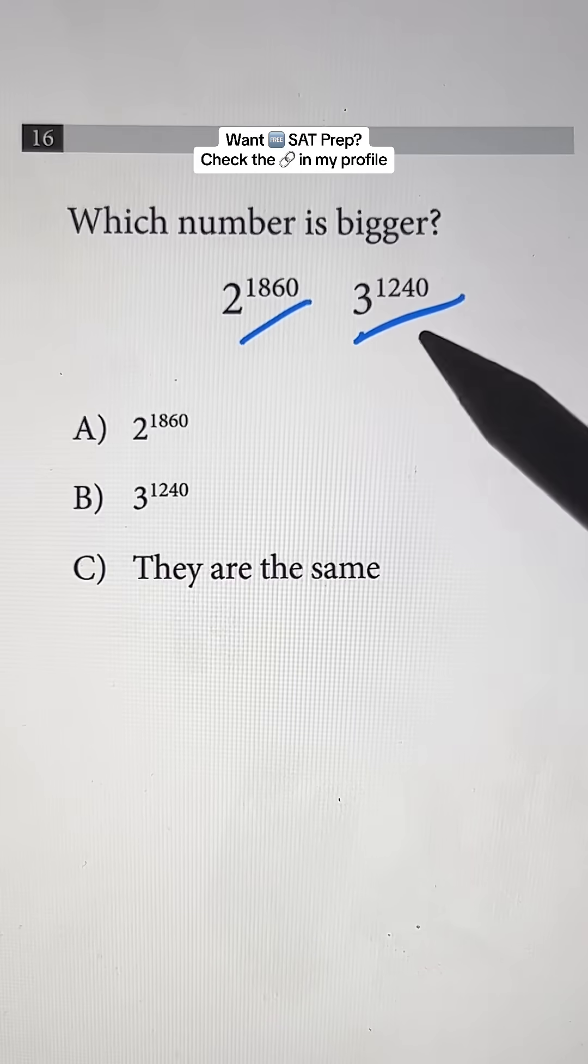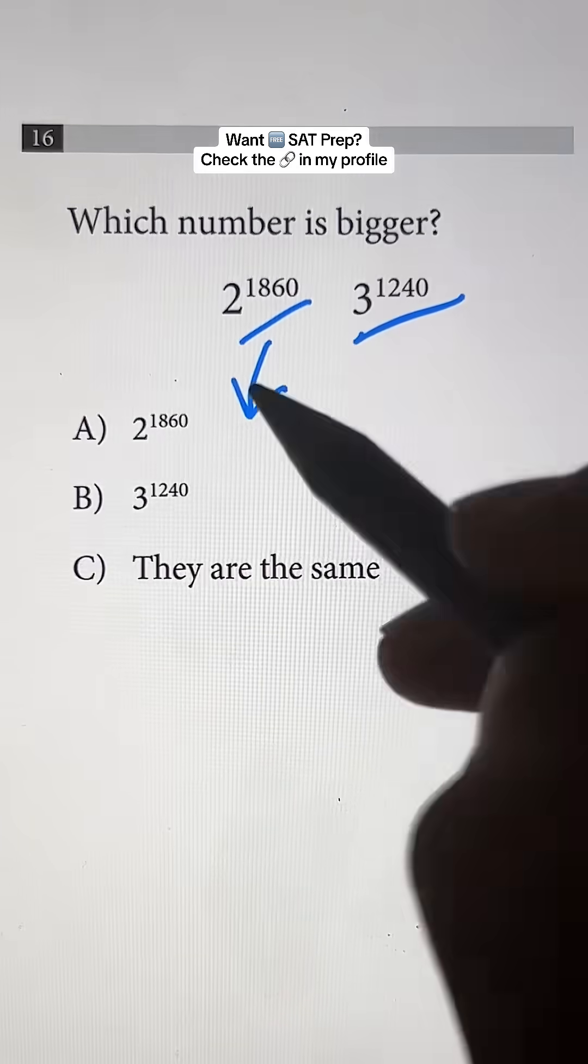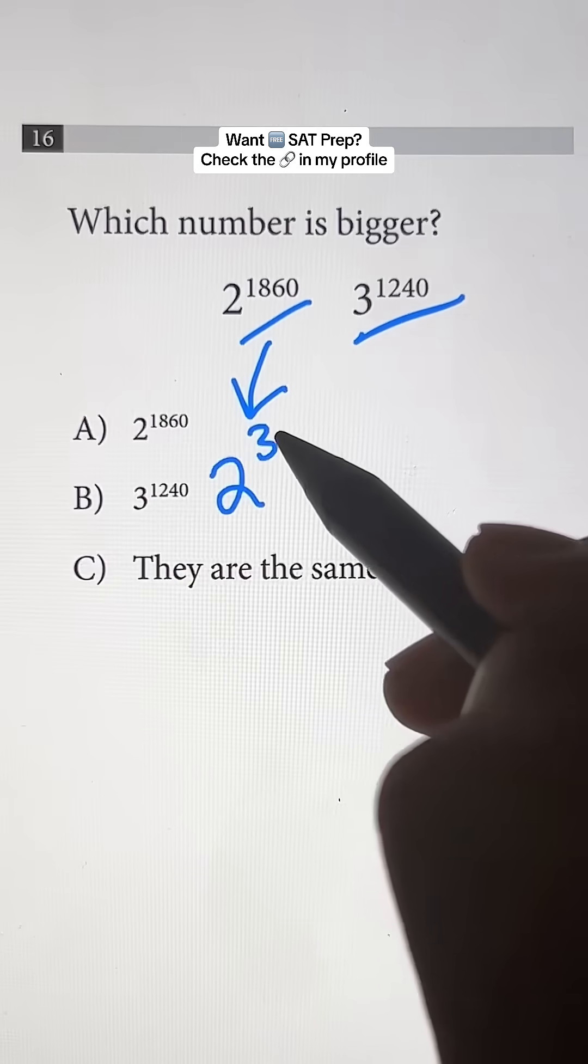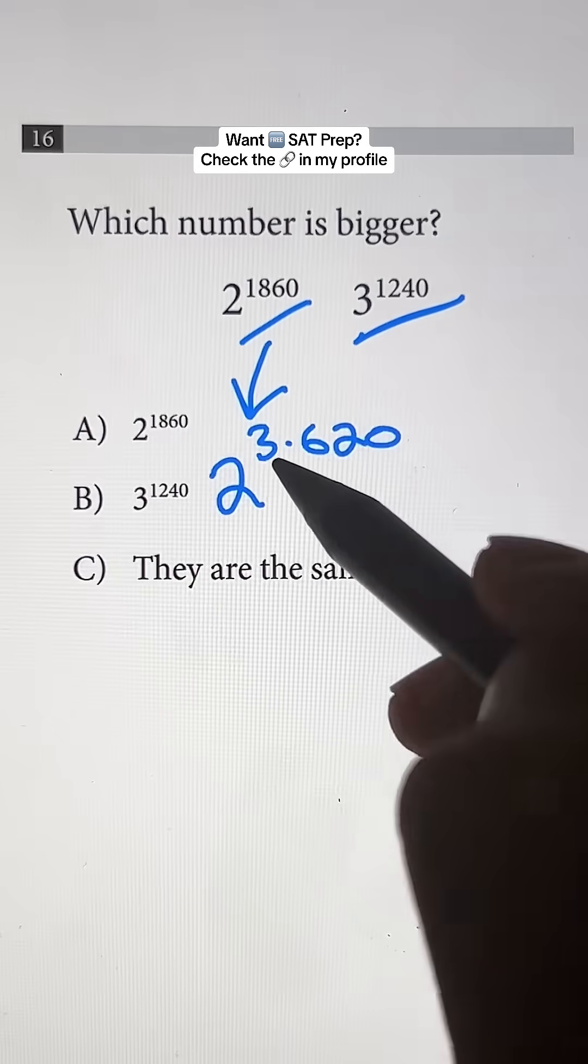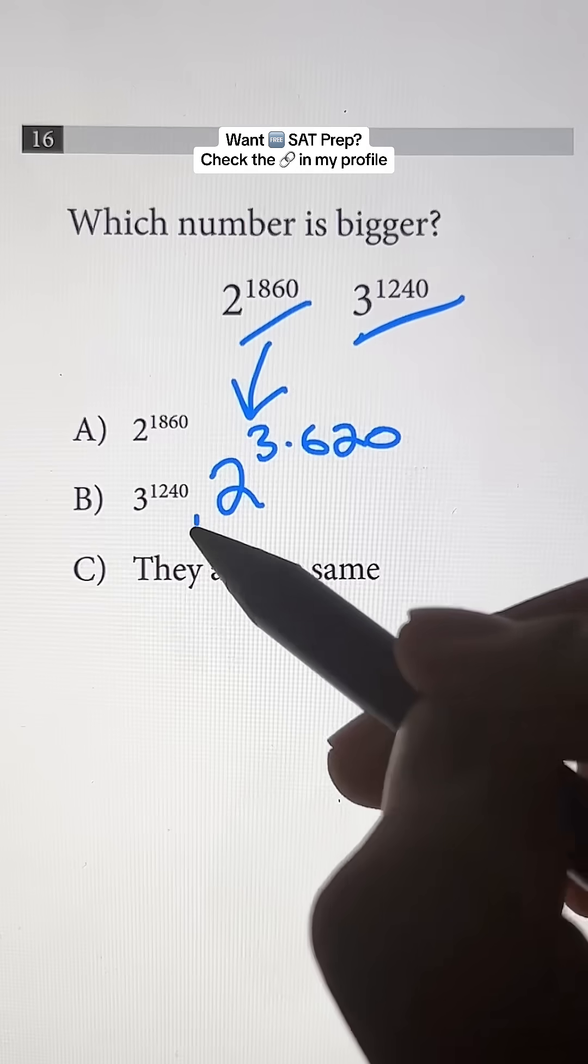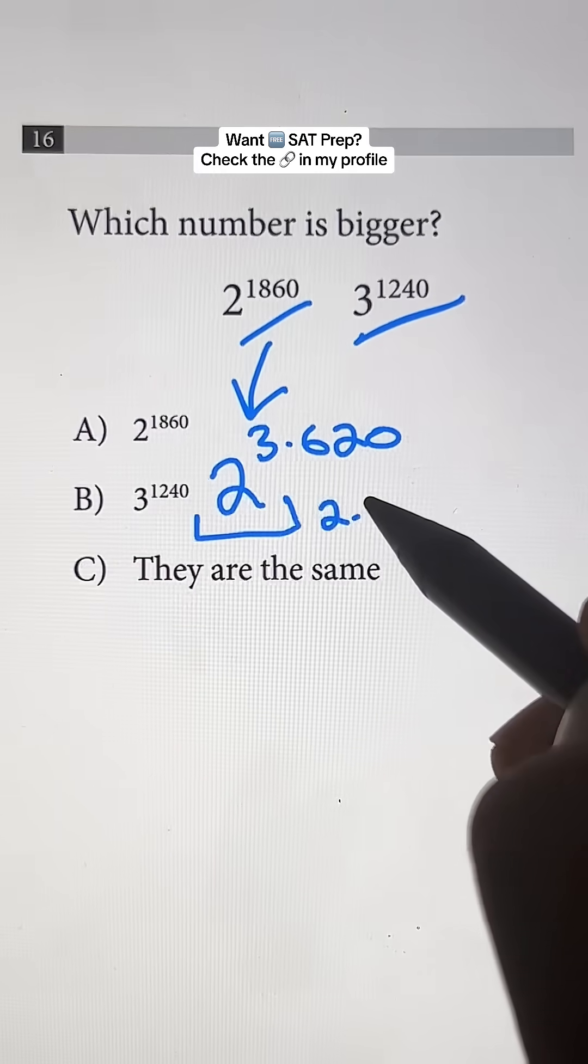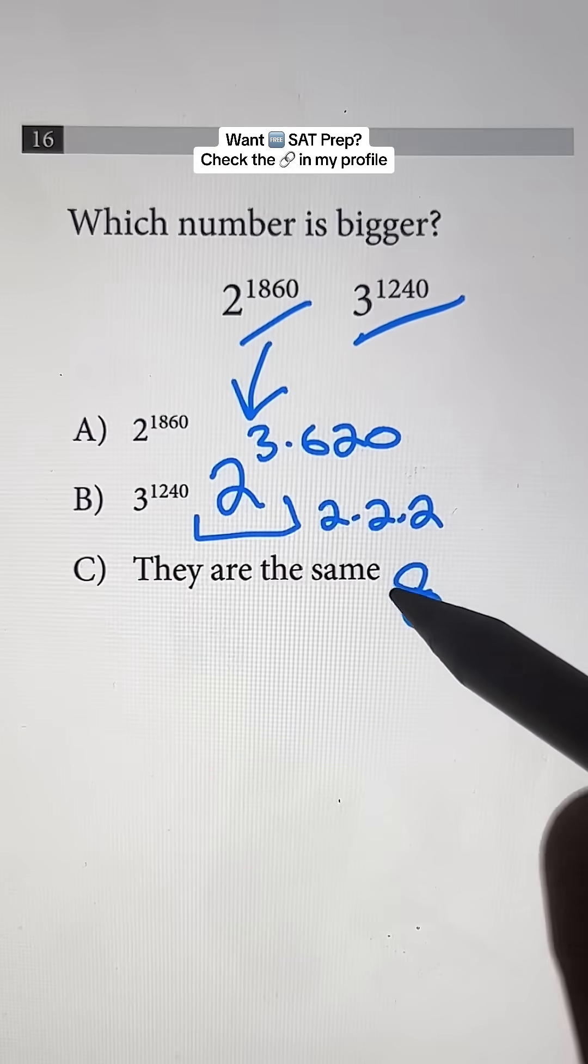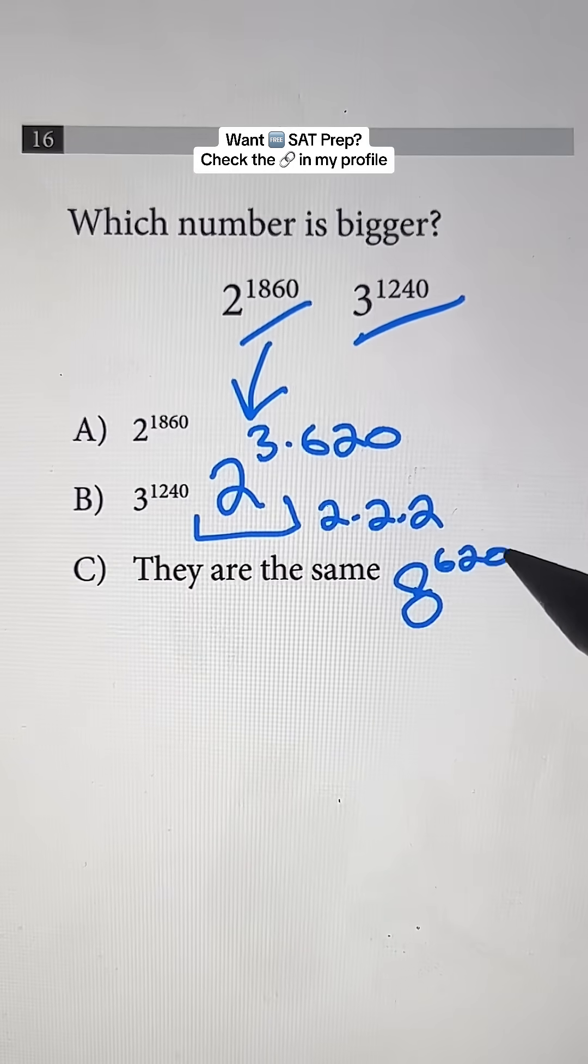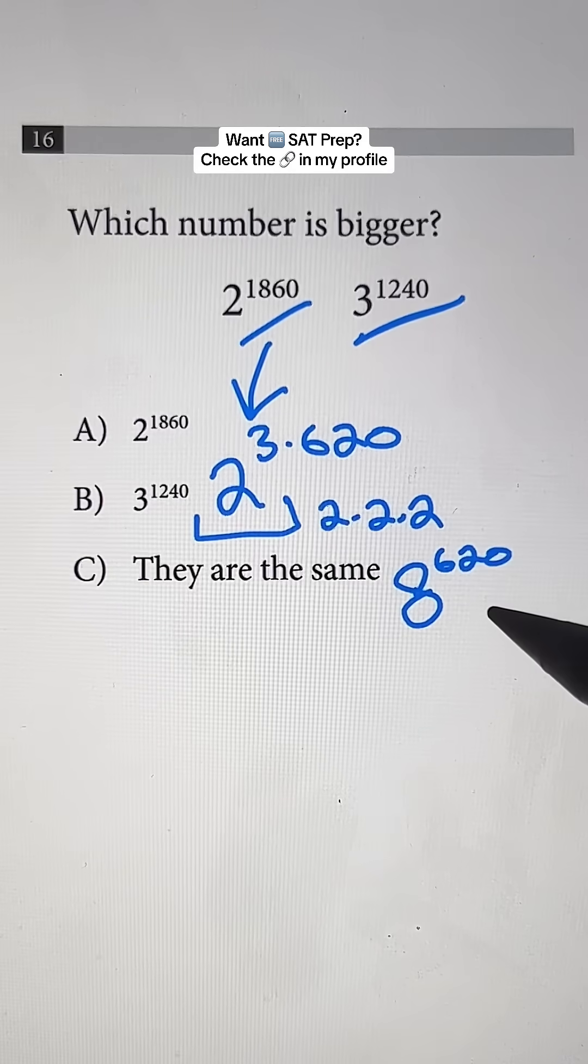The first thing we want to do is simplify these two numbers. So 2 to the 1860th power, we can rewrite that as 2 to the 3 times 620 power, because 3 times 620 is just 1860. And 2 to the third power is just going to be 2 times 2 times 2, which is 8. So we have 8 to the 620th power. This is still a ridiculous number, but you'll see where I'm going in a second.